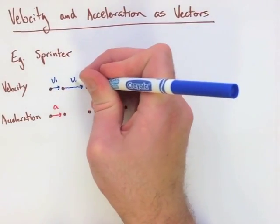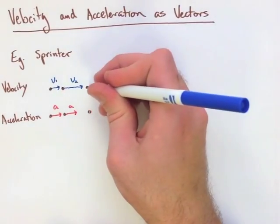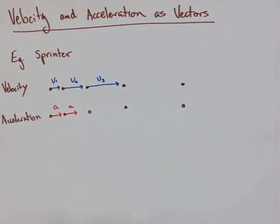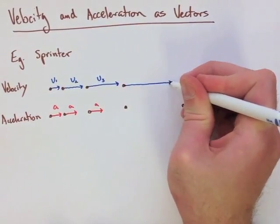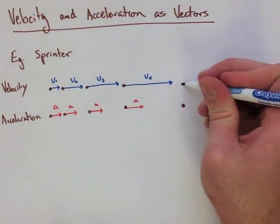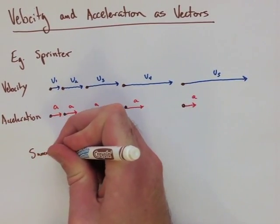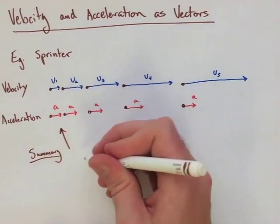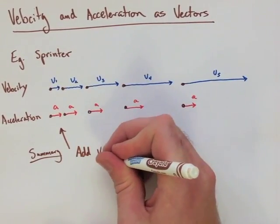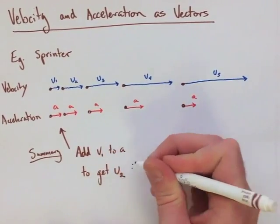So they start with some velocity and some acceleration. Then they have a second velocity, which seems to be the first velocity with the acceleration added. The third velocity is the same thing. Notice how our acceleration vectors are continually the same length, whereas our velocity vectors are increasing each time.